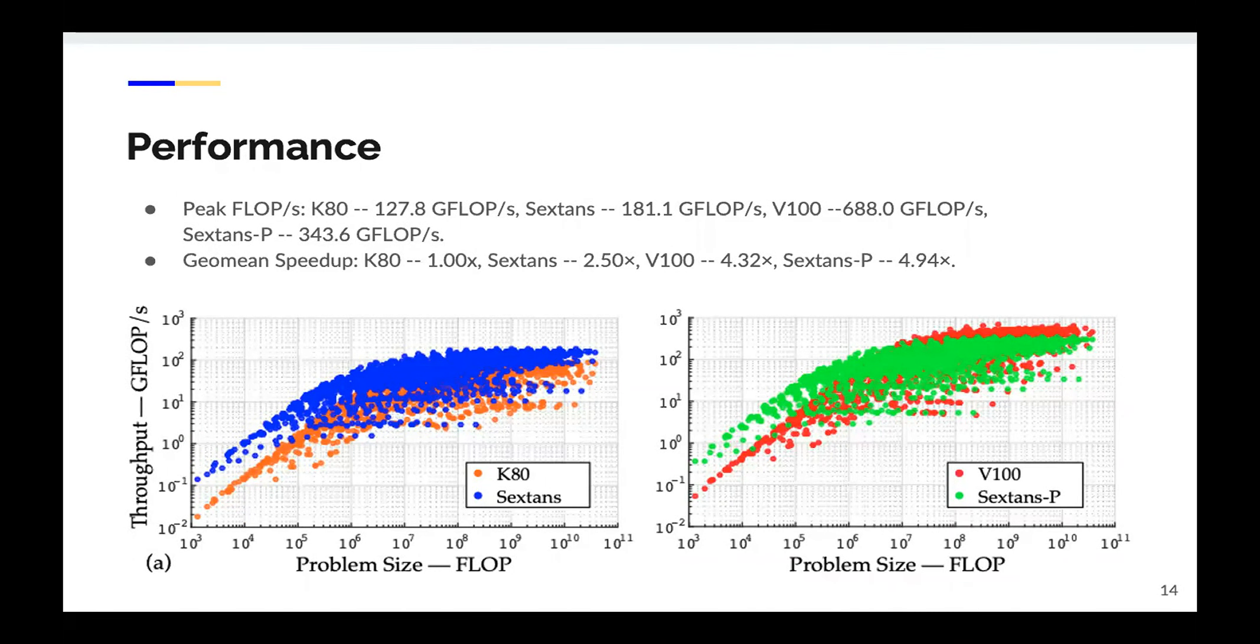Here we show the throughput in giga-flops of the four platforms. On the left hand side, we plot the performance of Sextense FPGA prototype and K80 GPU. The peak throughput achieved by K80 GPU is 127 giga-flops, while Sextense achieved 181 giga-flops. On the right hand side, we show the performance plots of V100 GPU and Sextense projection. The two platforms have higher memory bandwidth than K80 and U280. Sextense P achieved a peak performance of 343 giga-flops, but V100 got more than 600 giga-flops. That is because V100 has much higher frequency. For the geometric speedup, we normalized to the K80 GPU. Sextense got 2.5x, V100 got 4.3x, and Sextense P got 4.9x.